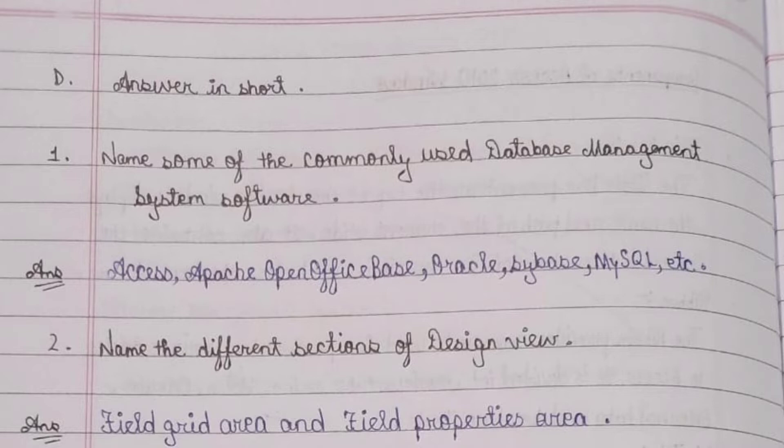Answer the following questions in short. Question 1: Name some commonly used database management system software. Answer: Access, Apache OpenOffice Base, LibreOffice, MySQL, etc. Question 2: Name the different sections of design view.